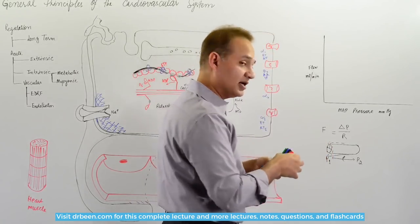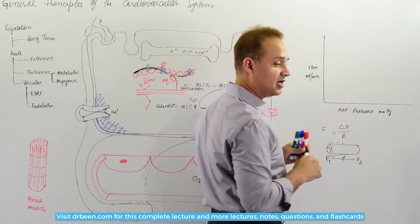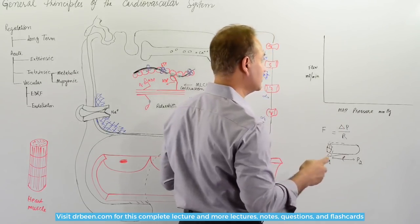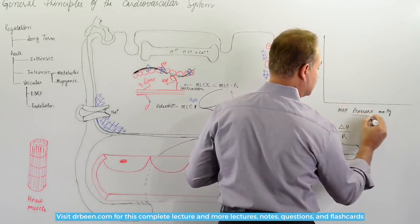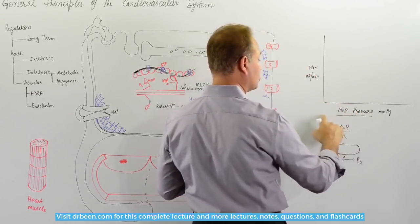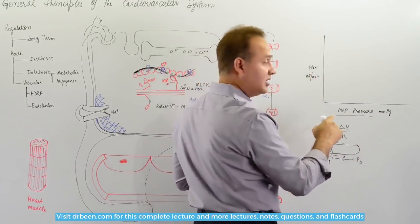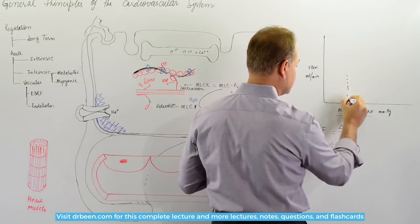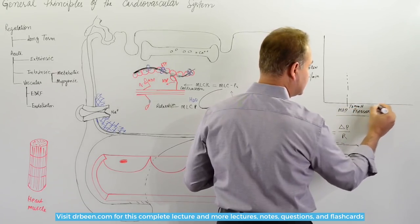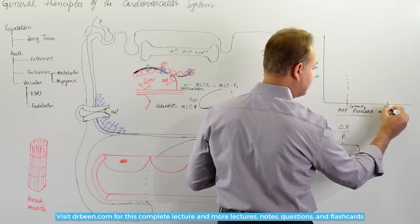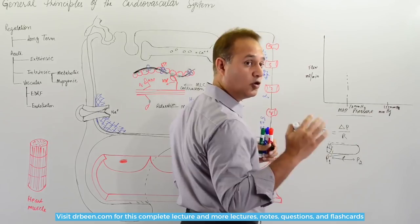Now, our body is so smart in keeping the flow the same. If we look at this chart or graph, you may end up seeing this in the USMLE and other examinations. Imagine that this x-axis is the pressure, the mean arterial pressure. This is flow of the blood. Let's say this is 70 millimeters of mercury and this point is 175 millimeters of mercury. Again, this is mean arterial pressure, not systolic or diastolic.